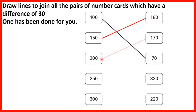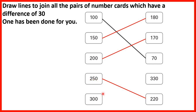We can match 200 and 170 because 200 minus 170 is 30. We can have 250 and 220 because 220 is 30 less, so it has a difference of 30 with 250. And then we can match 300 and 330.